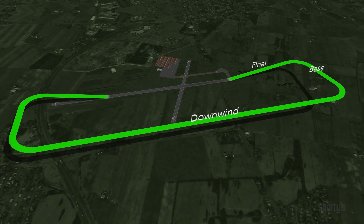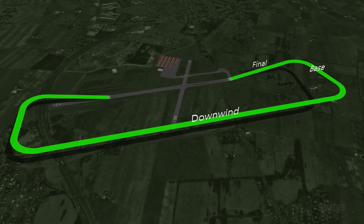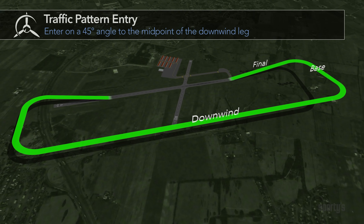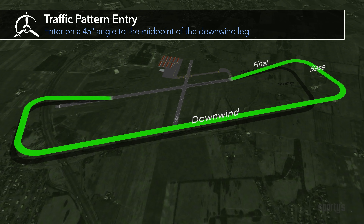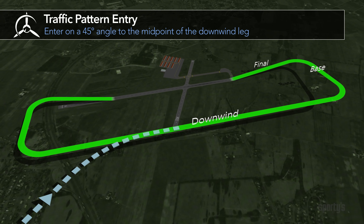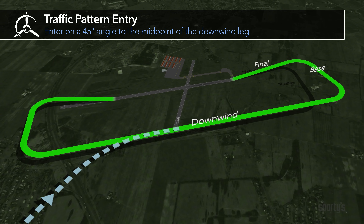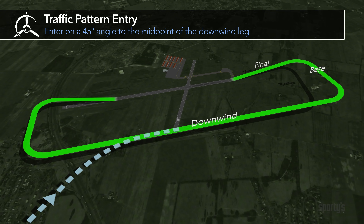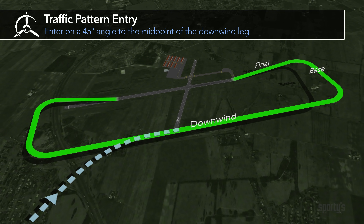There are several ways to enter the traffic pattern when returning to the airport. The most common method is to enter on a 45-degree angle to the midpoint of the downwind leg and then continue on to the downwind, base, and final legs.